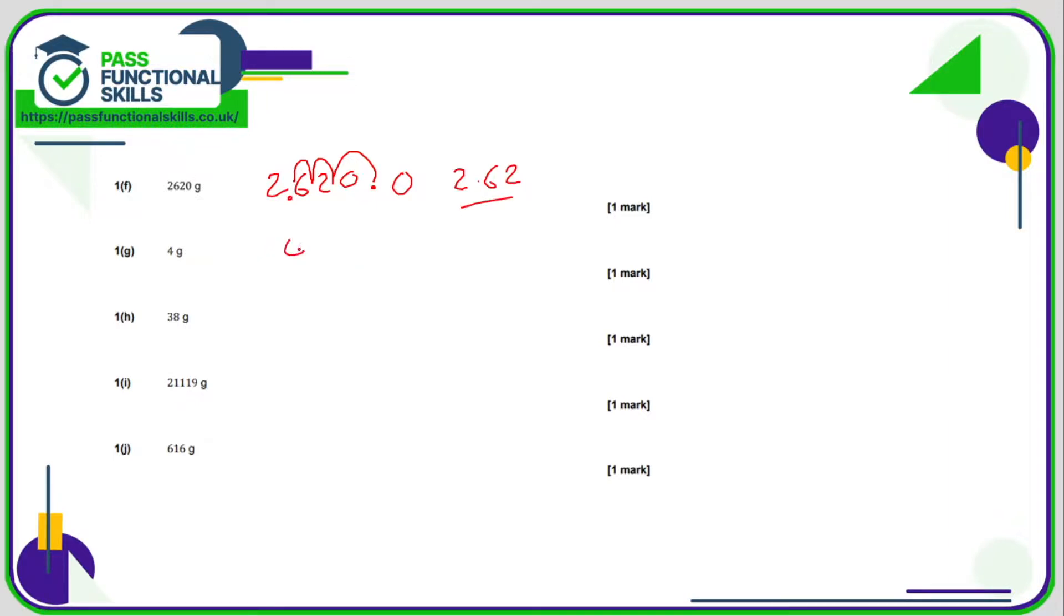4 grams. I'm going to write that as 4.0. But I'm going to stack some zeros on the left hand side. So that it's easy to move the decimal point. Otherwise it's not obvious where you're moving the decimal point to. And the answer is therefore 0.004. 38 grams is 38.0 grams. Again I'll put some zeros in front so that the decimal point can slot in there nice and easily. So the answer is 0.038.